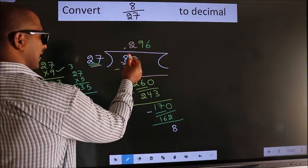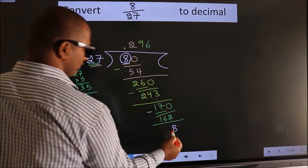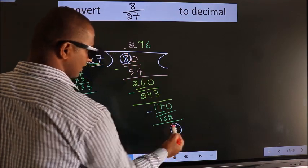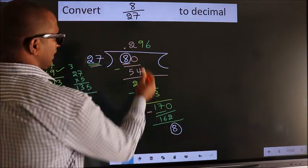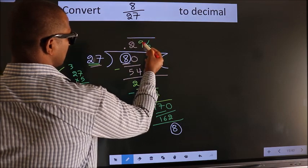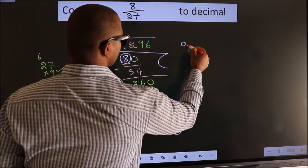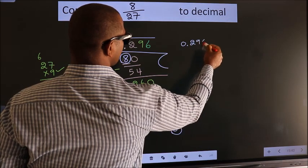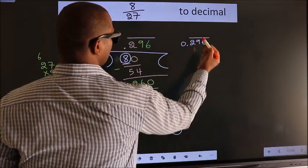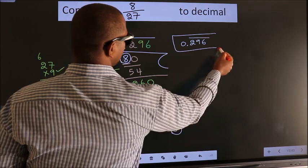That means we get bar on these three numbers. Therefore our answer is 0.296 with bar on these three numbers. This is our answer.